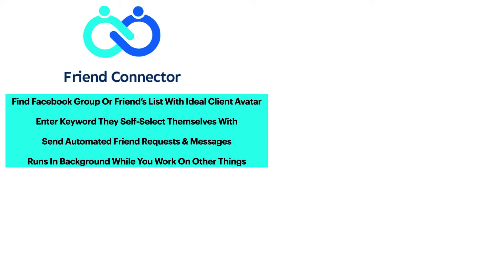Friend Connector works by having you find Facebook groups or friends lists where your ideal clients are hanging out. You'll be able to enter a keyword that they use to self-select themselves with — this could be owner, CEO, digital marketer, coach, consultant, dentist, lawyer, accountant, whatever it might be for your niche. Then you'll be able to send automated friend requests and dynamic messages.